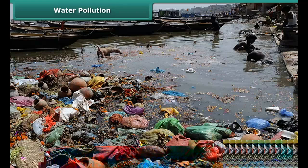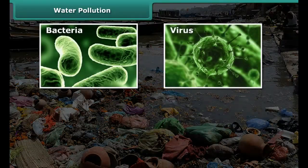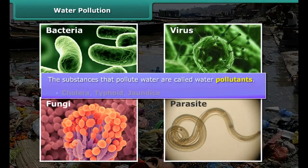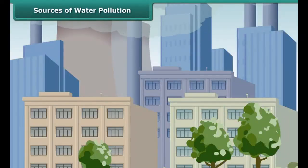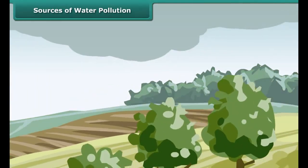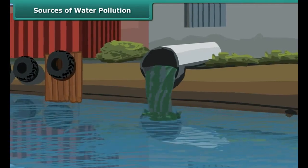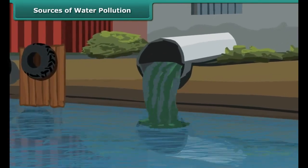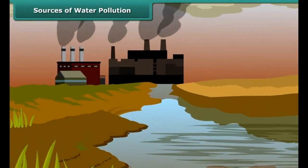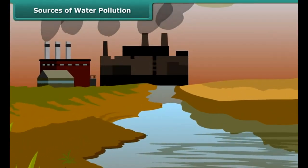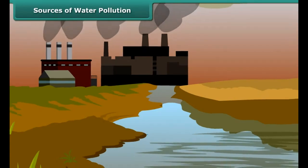The polluted water of these resources may contain bacteria, viruses, fungi and parasites, which cause diseases like cholera, typhoid and jaundice. Pollution enters a water body as acid rain, eroded soil, runoff containing fertilizers and pesticides, as well as chemicals released from industries and other sources from cities and towns. Chemicals released from industries, like arsenic, lead and fluorides, lead to toxicity in plants and animals.